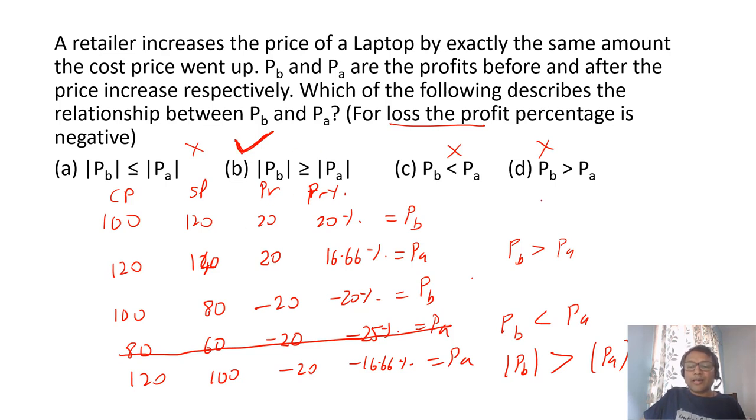So you can just assume numbers and try to solve. That is one good way of trying to solve. Even you can make it out by just looking at the numbers that as cost price went up, the profit percent can go down and the loss percent can go up. You can directly mark the answer as B.